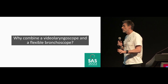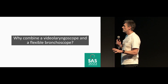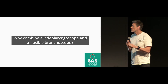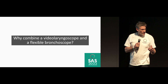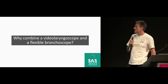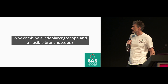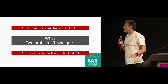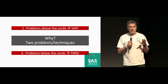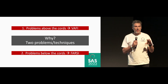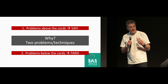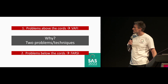The reason there are two techniques and there's confusion is we need to go back to the question of why would you combine a video laryngoscope and a flexible bronchoscope. The reality is there are two distinct problems we're trying to address and two distinct techniques. One technique, the VAFI, is really designed to address problems above the vocal cords — anticipated or unanticipated difficulty with getting to the vocal cords.